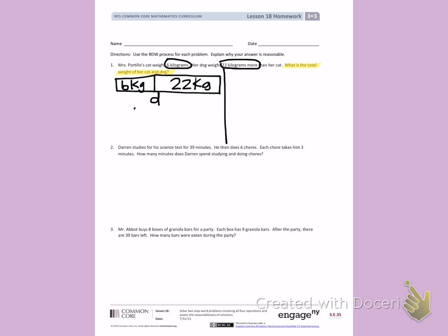22 plus 6 will equal D. I am going to rewrite my problem vertically to help me solve. 2 plus 6 is 8, and 2 tens plus 0 tens is 2. So D equals 28. I can write a sentence. The dog weighs 28 kilograms. I'm done with step one.